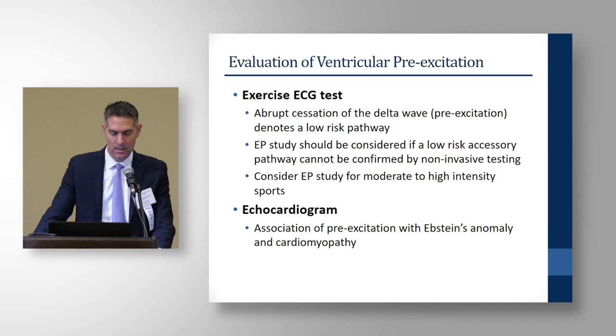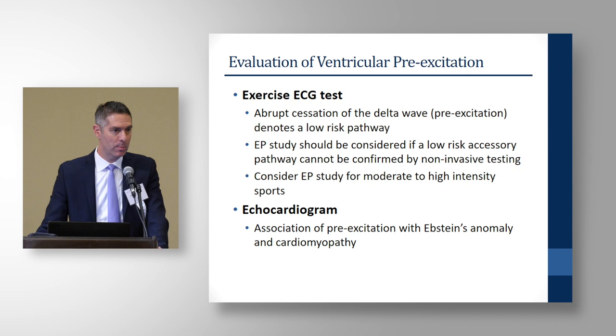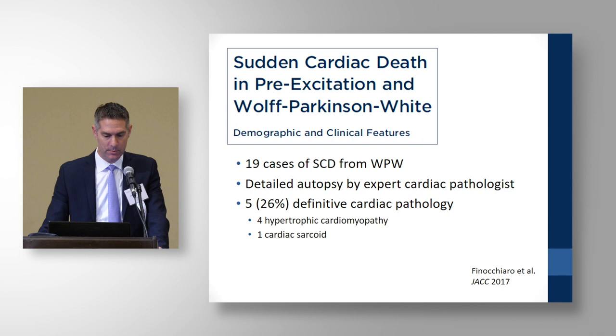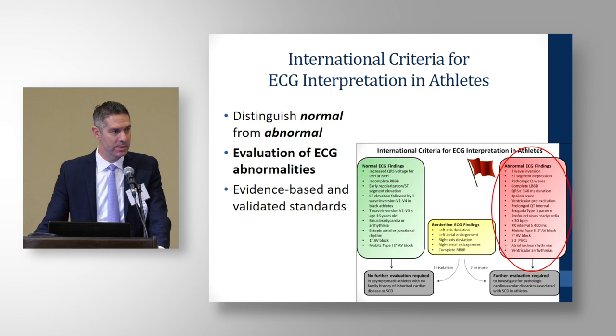An echocardiogram is also part of the workup for an individual with a WPW pattern ECG because of the association with Ebstein's anomaly or cardiomyopathy with pre-excitation. Work by Sanjay on individuals who had sudden cardiac death with pre-excitation showed that 26% had definitive cardiac pathology like hypertrophic cardiomyopathy. So our international criteria are there to help us distinguish normal from abnormal, and we have to remember the appropriate secondary evaluation of those abnormalities. We're going to hear more about it in the lectures to come.